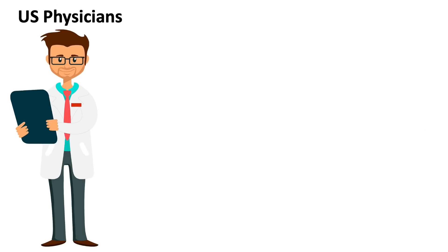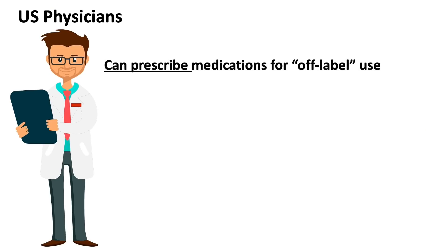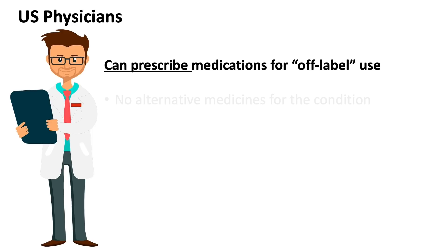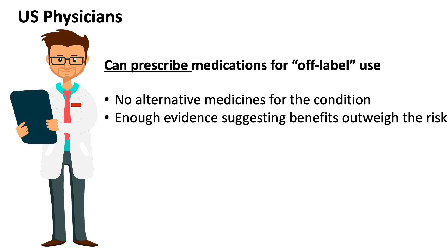But the upside is that here in the US, physicians can prescribe medicines for off-label use when there are no alternative medicines for the condition, or they believe there is enough evidence suggesting its benefits outweigh the risk. So that's my digest on the meta-analysis and how ivermectin could possibly play a role in the management of COVID, in particular in countries with fewer resources and vaccines.